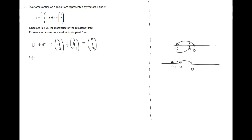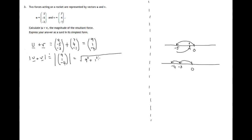The magnitude of that sum — in other words the magnitude of the vector that has components 9, 1, negative 4 — well, what do we do? Square root of, and then square each of these components and add them: 9 squared plus 1 squared plus negative 4 squared.